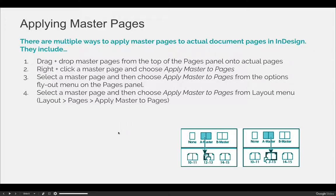You would then repeat the same process — enter the pages that you want your master page to be linked to. You can put dashes to do a range, so 1-37 will be pages 1 through 37. And you can use a comma to separate individual pages, so 1, 7, 11, etc.